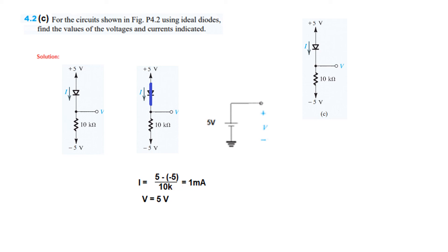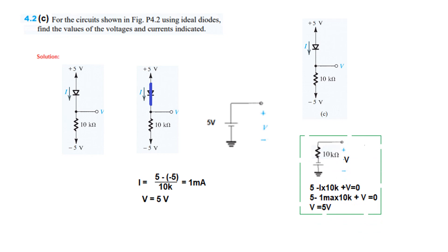For the voltage, we can work with the loop directly or draw the equivalent circuit. Drawing it: this is plus 5 volt and then voltage V here, so V equals 5 volt. Alternatively, working with the bottom loop by KVL: minus I times 10K plus V, substituting the current, you can also find V to be 5 volt.